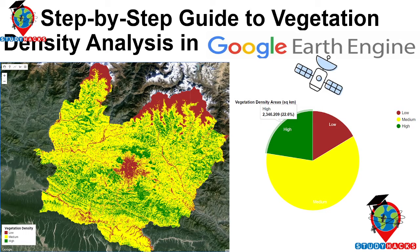Hello everyone, welcome to the Study Hacks Initiative of GIS and Remote Sensing. Today I will discuss a very important topic: how we can easily calculate vegetation density using Google Earth Engine. Mainly, I will show you how to calculate the NDVI — Normalized Difference Vegetation Index — which is a widely used indicator for quantifying vegetation density and health.